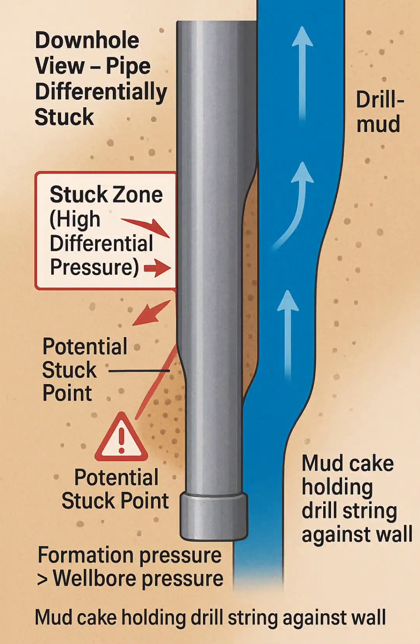Formation (light brown): The permeable formation allows formation fluids to exert higher pressure on the pipe wall.